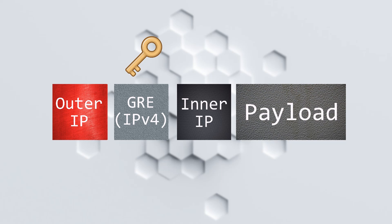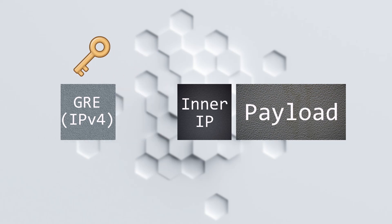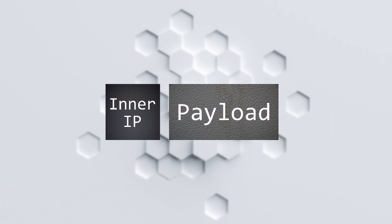The encapsulated traffic is forwarded across the underlay network just like any other packet. The original packet is not changed as it's passed around. When the packet arrives at the destination router, the headers are removed, leaving the original untouched packet.